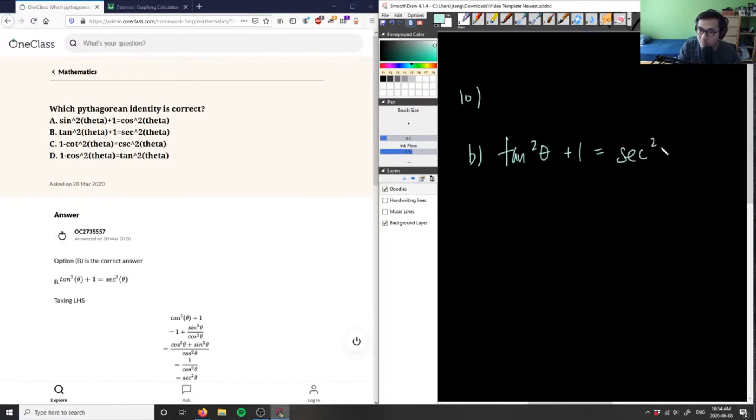What we can do first is change tangent into sine and cosine, so we have sin²θ/cos²θ + 1 = sec²θ.